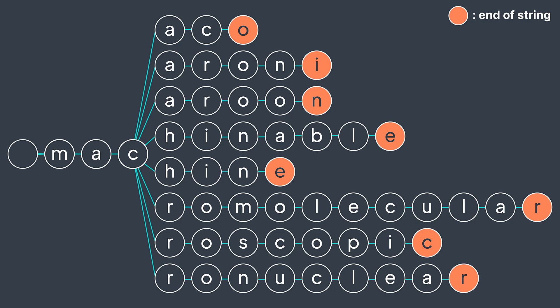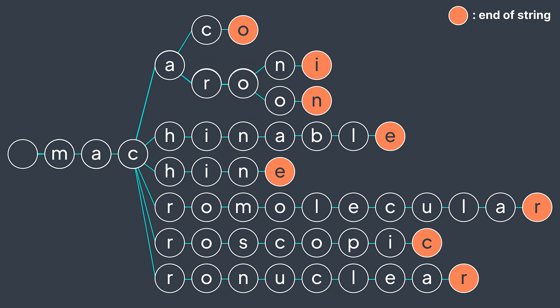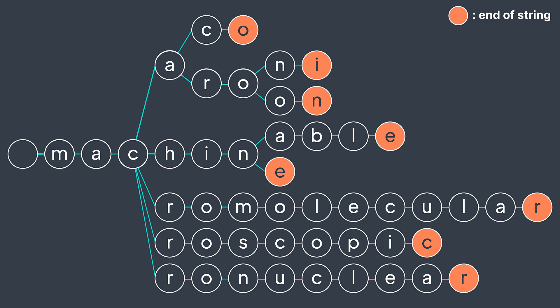Now Eiko, Aroni, and Arun all start with A, so we store A once and attach the remaining part. Aroni and Rune both start with 'ro', we store it once. Heinable and Hein both start with 'hen', we store it once. And Romolecular, Roscopic, and Ronuclear all start with 'ro', we store it once. And we can't optimize anymore.